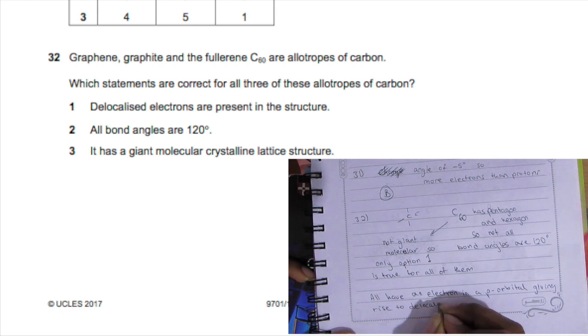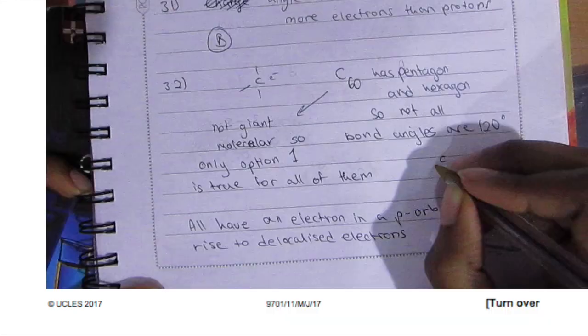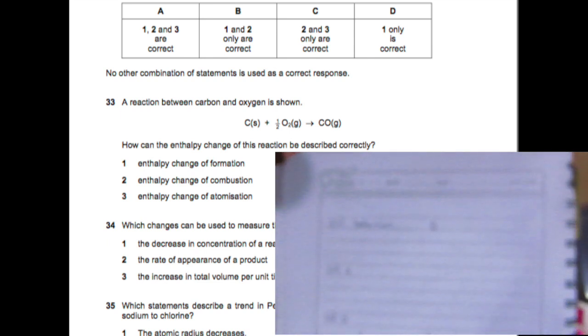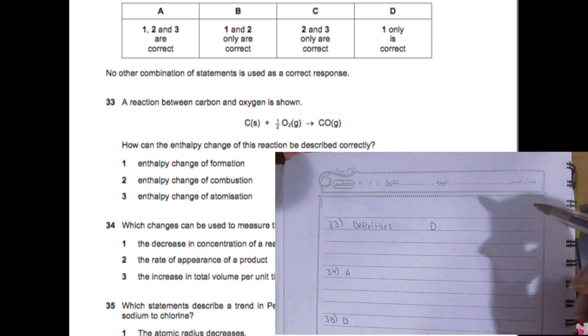Question 33: A reaction between carbon and oxygen is shown. How can the enthalpy change of this reaction be described correctly? Enthalpy change of formation is true because we are forming one mole of a product. Enthalpy change of combustion, no, because you need the element to be completely burnt with oxygen. Here it's incomplete combustion—that's why you have carbon monoxide, not carbon dioxide.